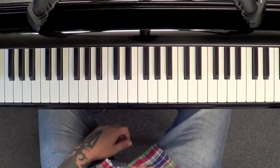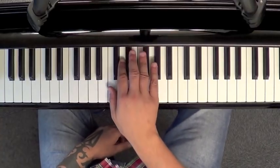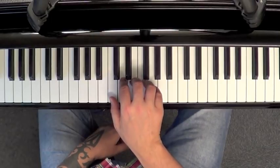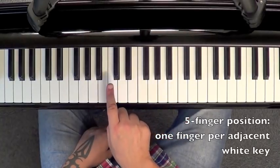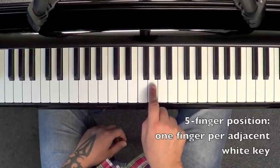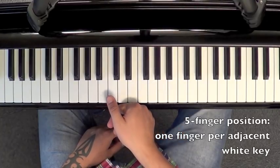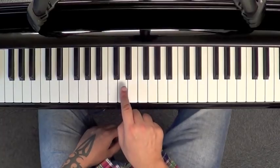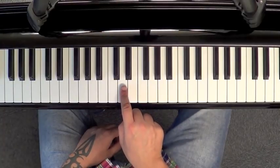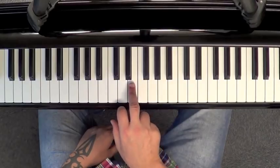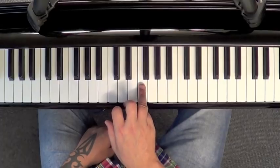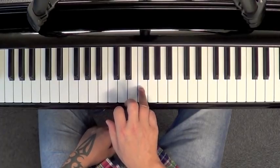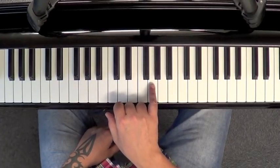Now for your five finger exercise I'd like you to place one finger over each key from middle C to the next G. So thumb finger 1 on C, index finger 2 on D, middle finger finger 3 on E, ring finger finger 4 on F, and little pinky finger 5 on G.